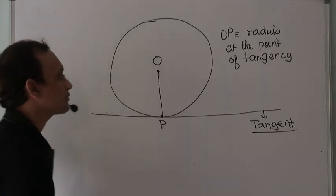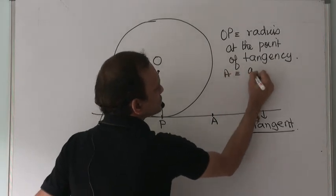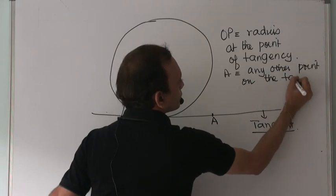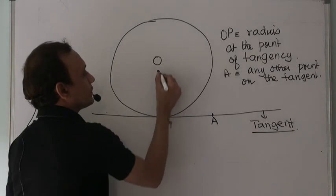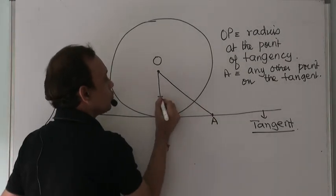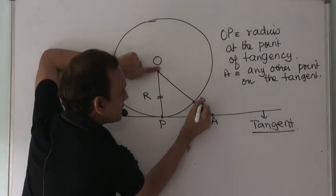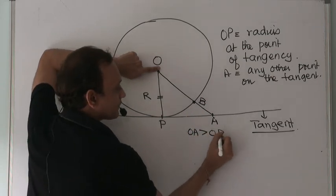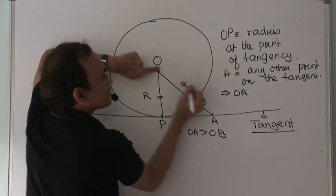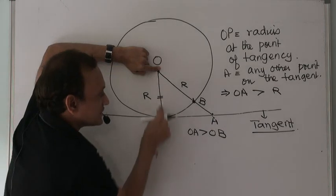Now if I take any other point A on the tangent, the distance OA will always be greater than the radius R, since OP is the radius R of the circle. Since A is outside the circle, OA will always be greater than the radius R.